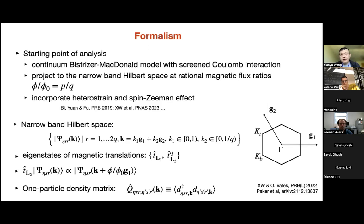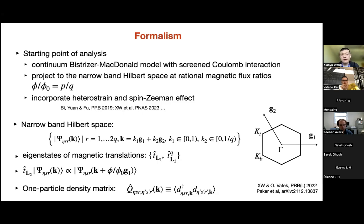Just a brief introduction to the formalism. The starting point for this finite-field calculation is the continuum Bistritzer-MacDonald Hamiltonian with a screened Coulomb interaction. In finite field, the band gap to the remote band does not close in our calculations, which allows us to approximately throw away the Hilbert space of the remote bands and only keep the low-energy sector. We also introduce heterostrain into the Bistritzer-MacDonald Hamiltonian following a nice 2019 work by B. Chen and Fengcheng Wu's group.